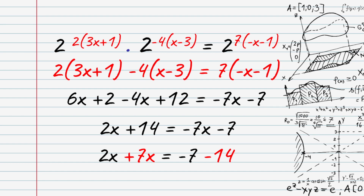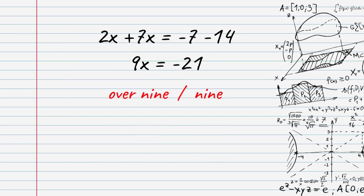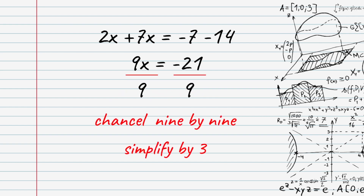Therefore, collecting like terms: 2x plus 7 on one side, and 9x minus 7, minus 41 on the other. The x is solved: you can simplify x over 9, so x equals x over 9.